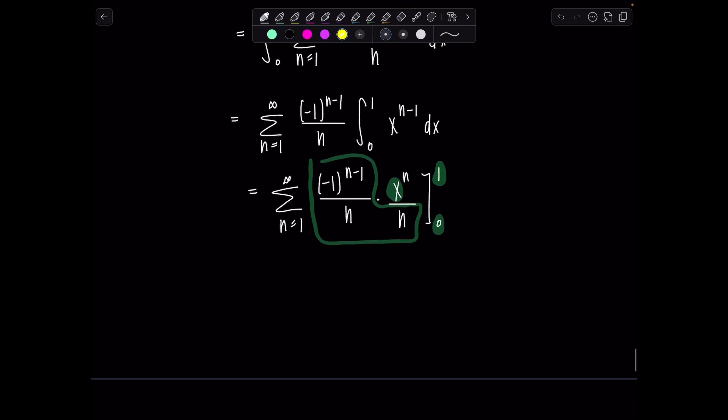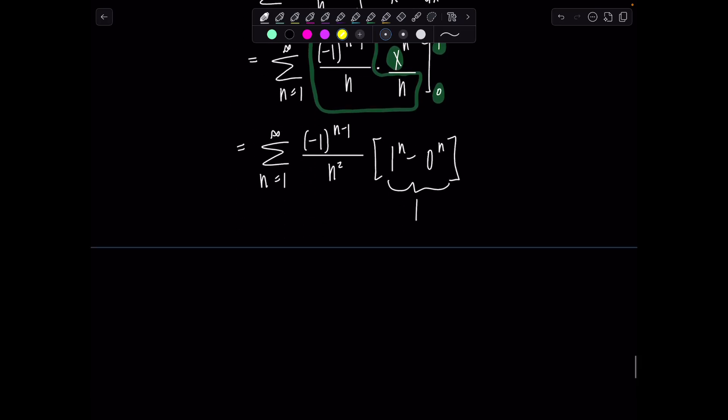So just rewrite everything else. We have the sum, n equals 1 to infinity, negative 1 to the n minus 1 over n squared, and then I'll have 1 to the n minus 0 to the n. So this is going to be 1 minus 0, which is 1. And so I'm left with the sum, n equals 1 to infinity, negative 1 to the n minus 1 over n squared. And that's the result from our integral.